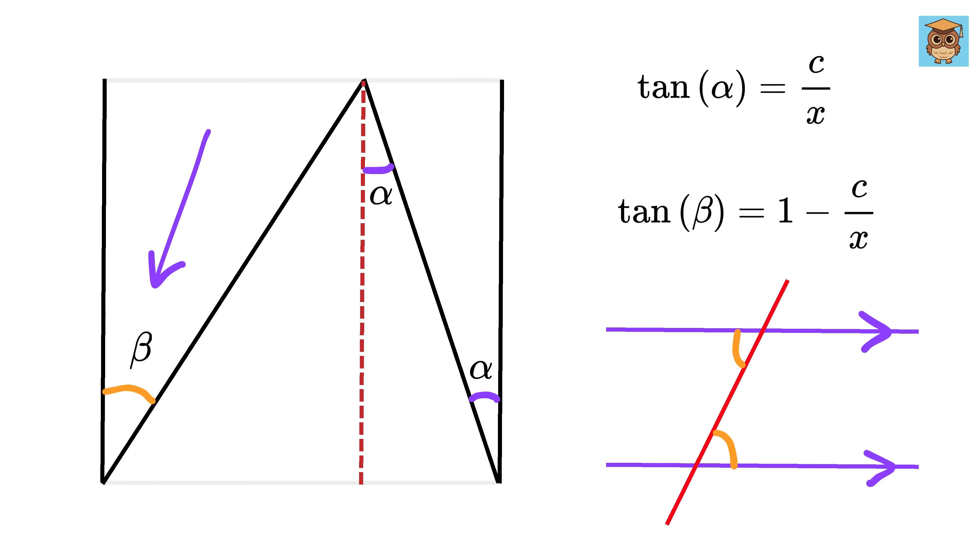Similarly, if this is beta, then this angle will also be equal to beta. Voila! This means our angle theta is simply equal to alpha plus beta. Now let us simplify things a bit.